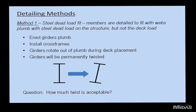In a skewed structure, the girder can be plumb only under a single loading condition, depending on the cross-frame detailing. The method commonly used in Ohio was steel dead load fit: girders are erected plumb under steel weight only, cross-frames are installed, and then when the deck is poured the girders are loaded and go out of plumb. The outstanding question was how much twist is acceptable under this method before it becomes a problem.